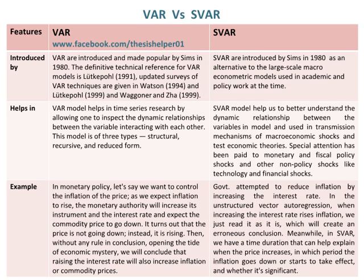VAR model helps in time series research by allowing one to inspect the dynamic relationships between variables interacting with each other. This model is of three types: structural, recursive, and reduced form. Whereas, SVAR models help us to better understand the dynamic relationship between variables in the model and are used in transmission mechanisms of macroeconomic shocks and to test economic theories.